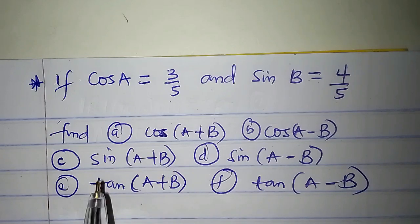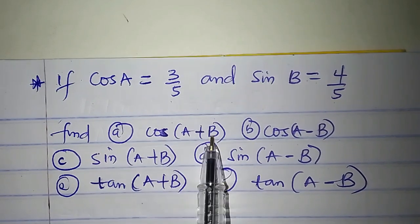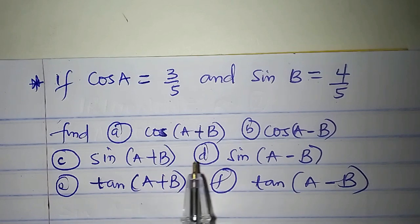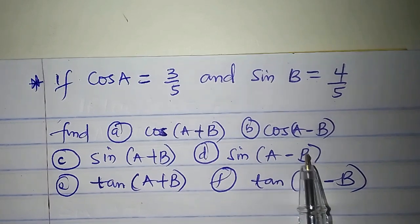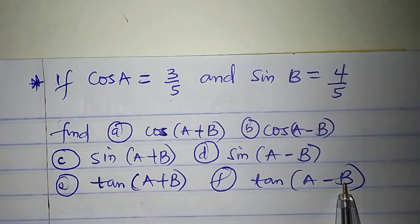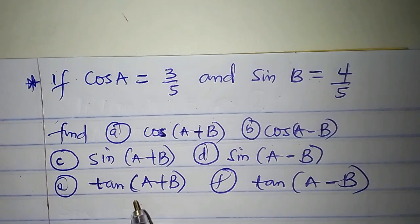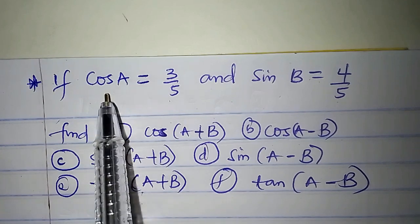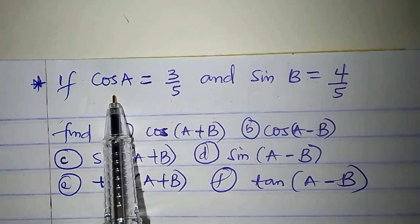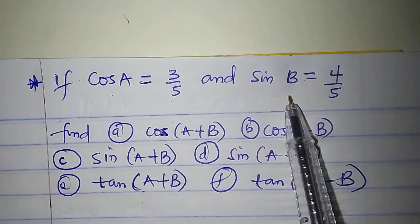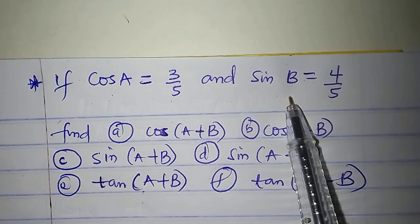If cos A is given, we need to find cos(A+B), cos(A−B), sin(A+B), sin(A−B), tan(A+B), and tan(A−B). Before we can solve these questions completely, we need the ratios for sin A and tan A, and also for cos B and tan B. So let's get them first.